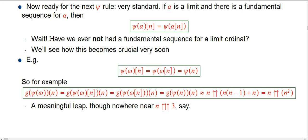One thing that's a bit different here is I've never had to say 'if there's a fundamental sequence for alpha' before. I don't mean just whether we've determined or specified one — there's always choices involved in that. What I mean is if there is a fundamental sequence for alpha at all. We're going to get into territory where that's not going to be true for every limit ordinal alpha, and in fact for some of the ones we really are interested in. That proviso will become crucial very soon, but for a while it's not going to be an issue.